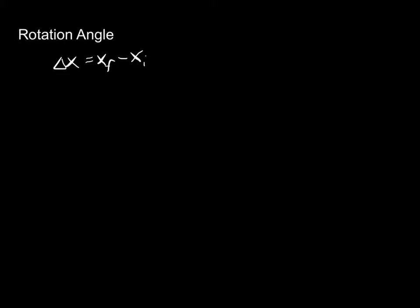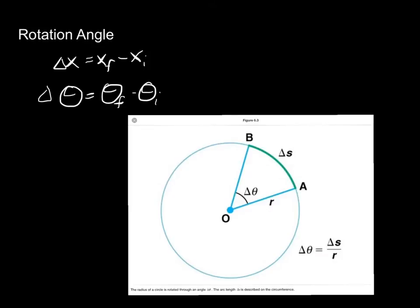To measure rotation angle, we're actually going to use an angle theta, and so we're going to have delta theta equal to theta final minus theta initial. We're going to measure the angle that it rotates through — from this angle to this angle — and that's how we measure how far it's gone around the circle. We have delta theta, the radius r, and delta s, which we call the arc length. Delta s is kind of our meters equivalent here.